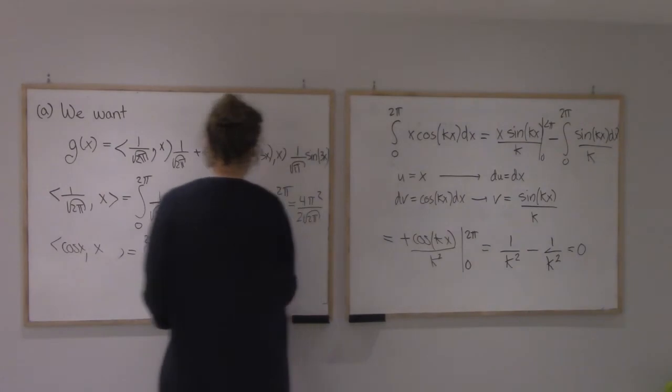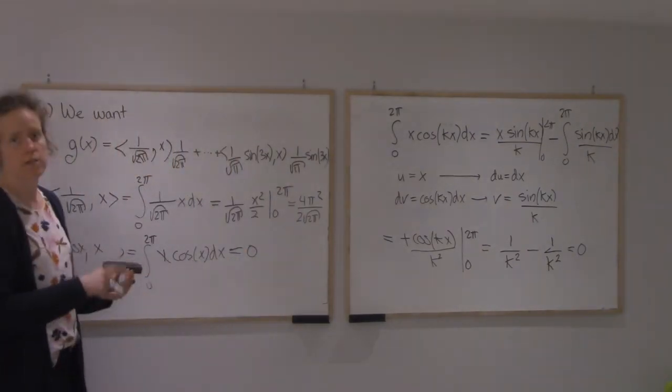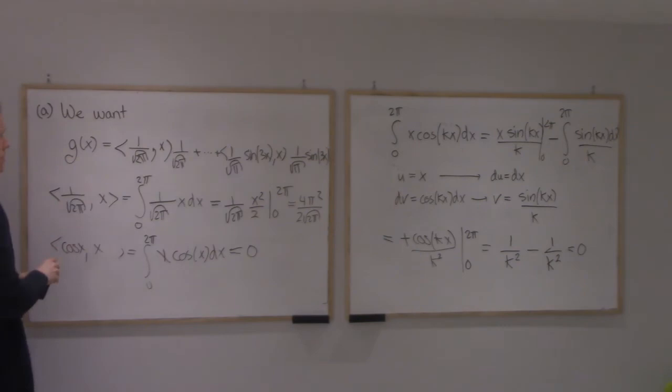So all of these will give me 0, cos x, cos 2x, cos 3x. Now let's do the same thing for sin. And then we'll be able to write everything we need.